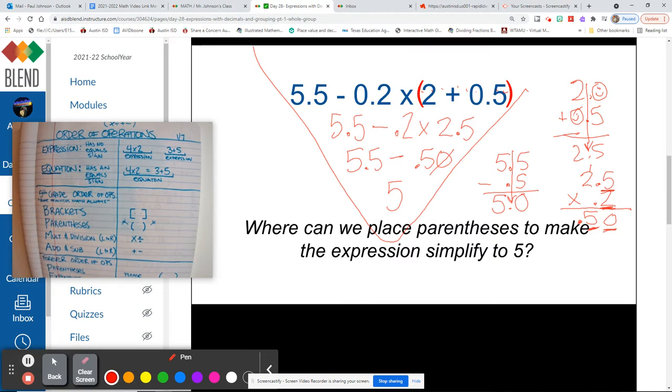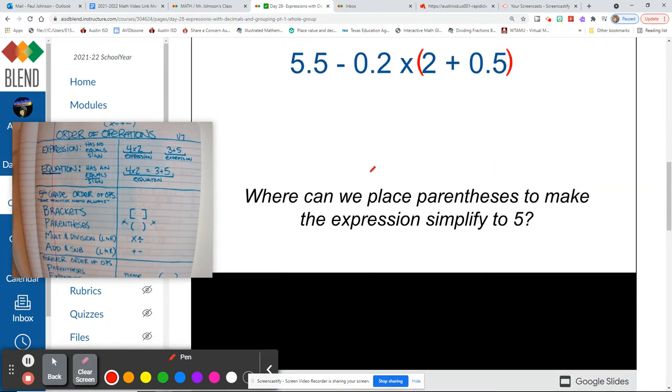Now if we put the parentheses somewhere else, we'd get a different answer. If we would not have used the parentheses at all, we still would have got a different answer as well, because our first step would have been 0.2 times 2, which would have started us with 4 tenths, which is not what we were doing. So if you have time, you could always do it without the parentheses in that place and see how different your answer was.